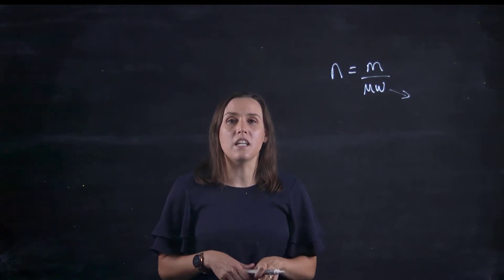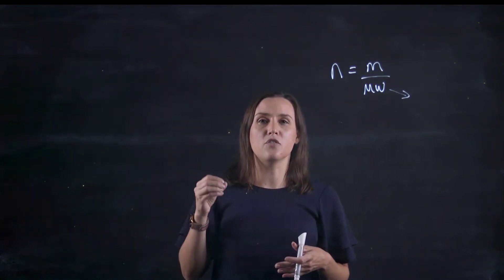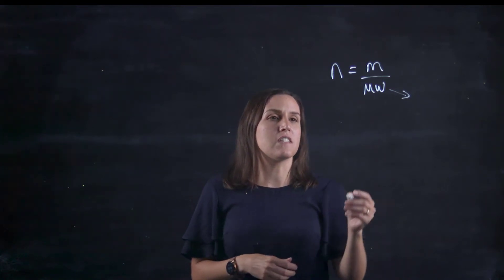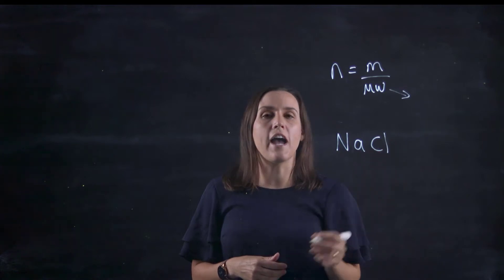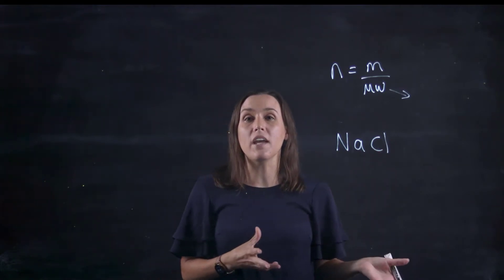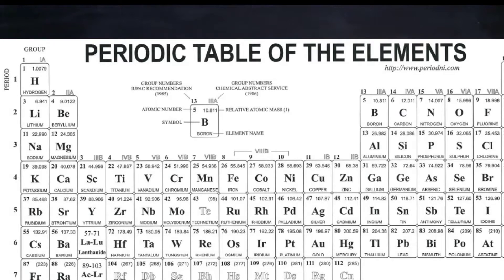To work that out, we need to look at the periodic table and we look up the mass of each of the individual atoms. For example, if I'm looking up sodium chloride and I want to work out the molecular weight for sodium chloride, on my periodic table I look it up and sodium's around about 23, and chlorine is around about 35.5.